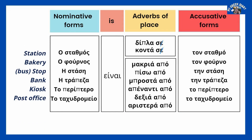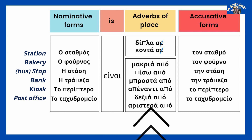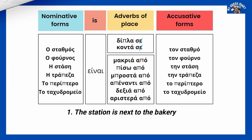Here we have a table to help us organize our learning with the names of some facilities in the nominative form, the verb 'to be' as it is, the most common adverbs to locate, and the same facilities in the accusative form. Let's analyze this table bit by bit with examples. It's ENA.